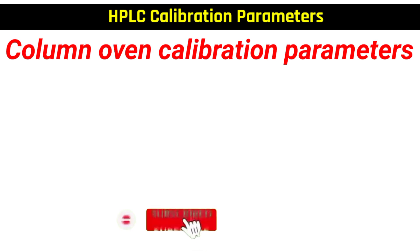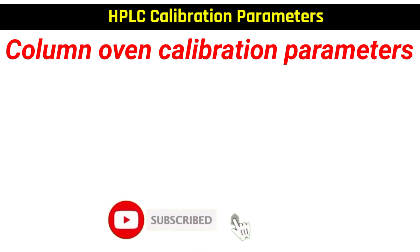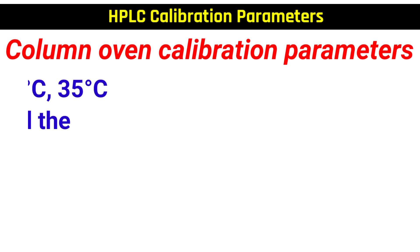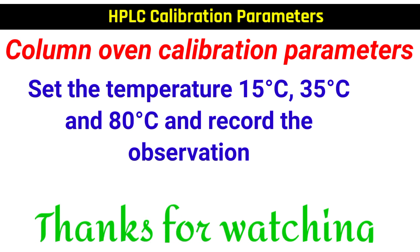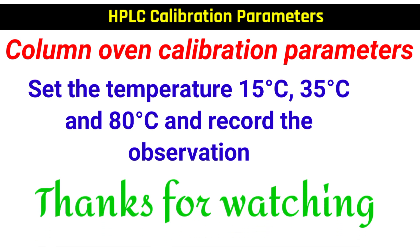The last one is column oven calibration parameters. In column oven calibration, set the temperature at 15°C, 35°C, and 80°C and record the observation. The column temperature must be plus or minus 1 degree centigrade of the set temperature.